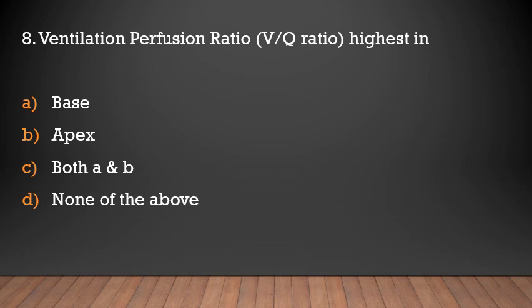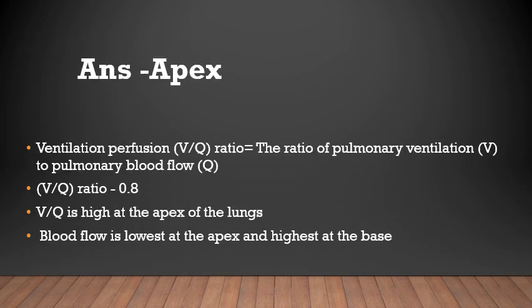Ventilation-perfusion ratio is highest in: base, apex, both, or none of the above? The answer is apex. The ventilation-perfusion ratio is the ratio between pulmonary ventilation and pulmonary blood flow, and it is about 0.8. Ventilation is highest at the apex of the lungs. For blood flow, it is lowest at the apex and highest at the base of the lungs.